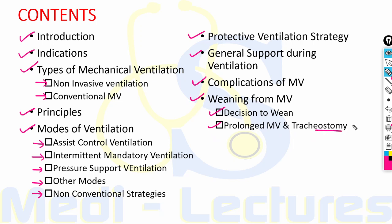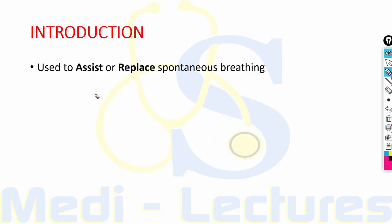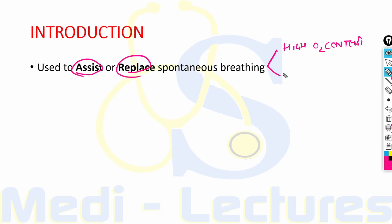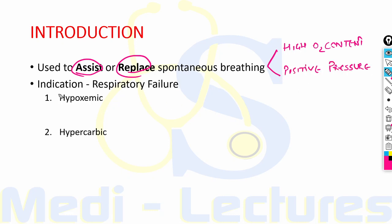Mechanical ventilation is used to assist or replace spontaneous breathing. It is implemented with the help of a ventilator that can support ventilatory function and improve oxygenation through application of high oxygen content and positive pressure. The indication for mechanical ventilation is respiratory failure, which can be of two types.